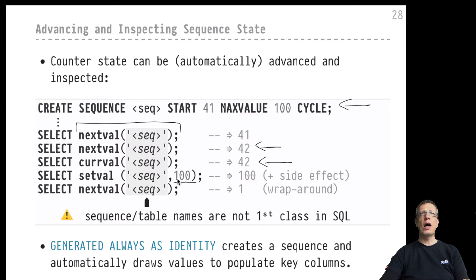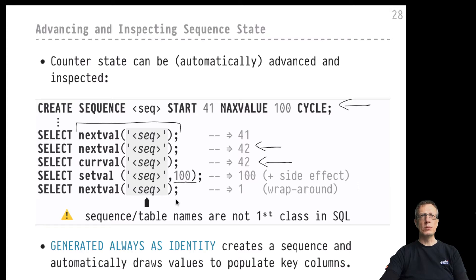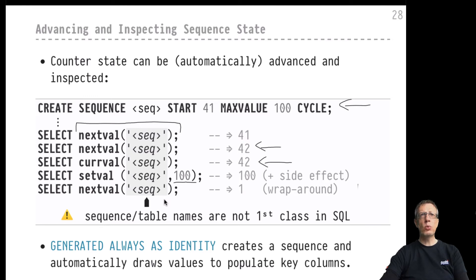We can also set the current value of the sequence to 100, for example, and on the next nextval call we'd see the value after 100 — because we defined a cycling sequence, it would cycle back to its minimum value of one. Note that sequence names are just string values in SQL; they are not first-class names. You have to specify sequence names as literal string values when calling the nextval and currval functions — this is due to a deficiency in SQL where names are not first class.